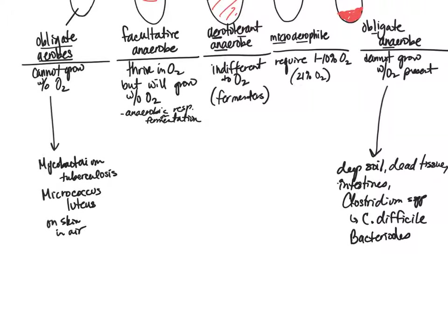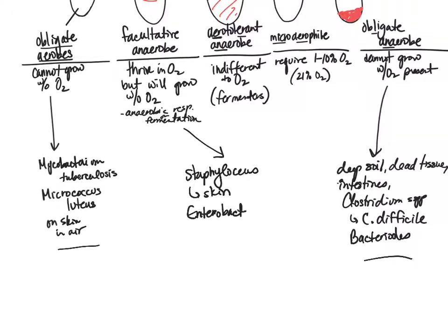Facultative anaerobes can switch between aerobic and anaerobic respiration. We find them in our intestines and respiratory tract, where oxygen levels vary by location. Examples include Staphylococcus — also found on skin, where some areas have more oxygen than others — and Enterobacteriaceae, which are found in the gut and respiratory tract.